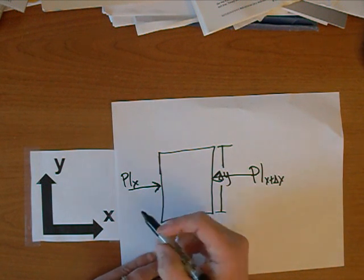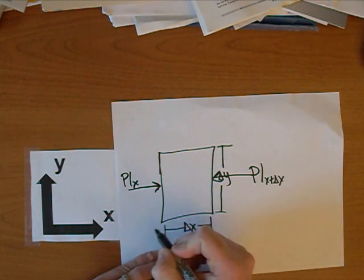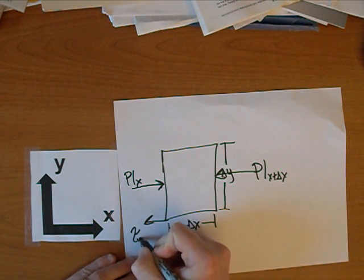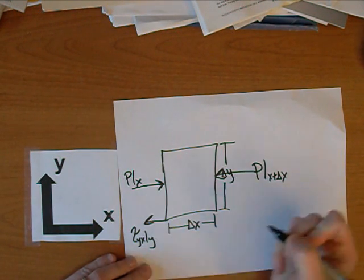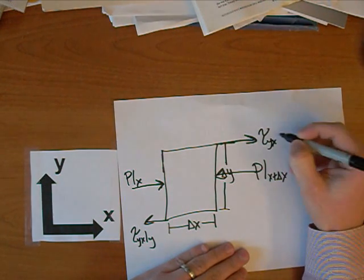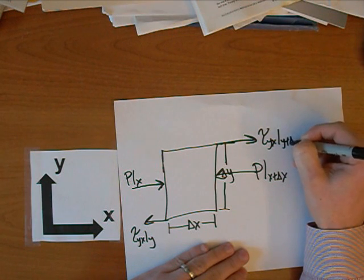And then you have a shear stress down on this bottom face, tau YX at Y, and then you have one on this top plate, tau YX at Y plus delta Y.